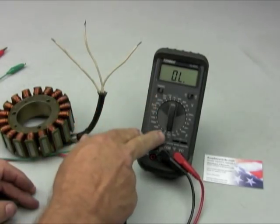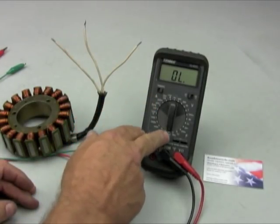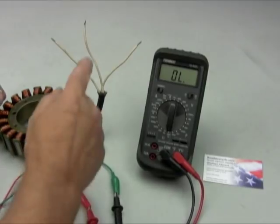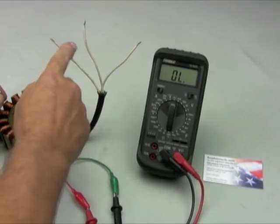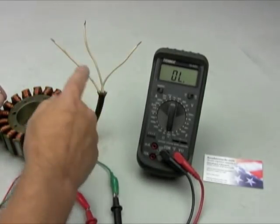You want to set your volt ohm meter on ohms. I have mine set at 200. We're going to say this is 1 or A, B, and C. We'll do it that way. A, B, and C.